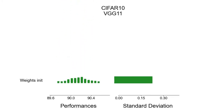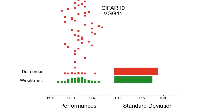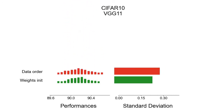Let's look at more sources of variation before making any observations. Another source often neglected is the ordering of the data during the optimization. Again, we train 200 models, this time only varying the ordering of the data. Finally, since the data in CIFAR-10 is IID, the splits for training and testing are arbitrary and can be randomly generated. We train 200 models on random splits, keeping all other sources of variation fixed.